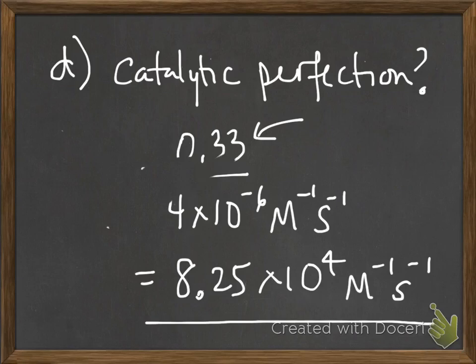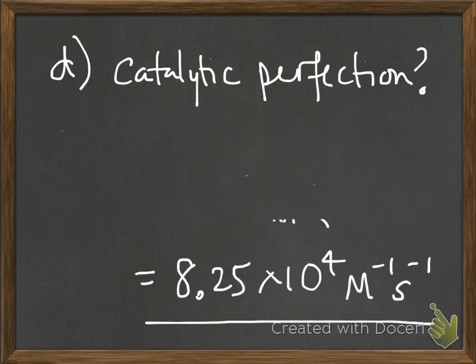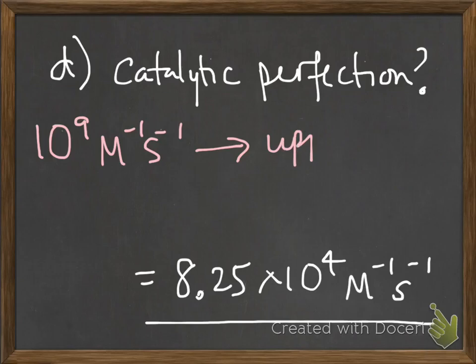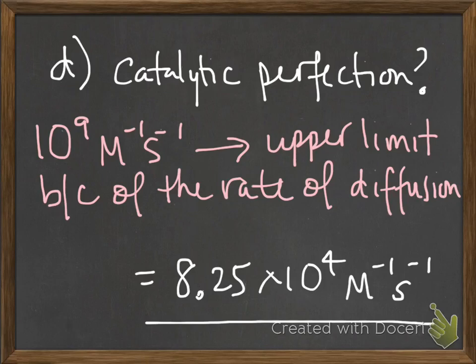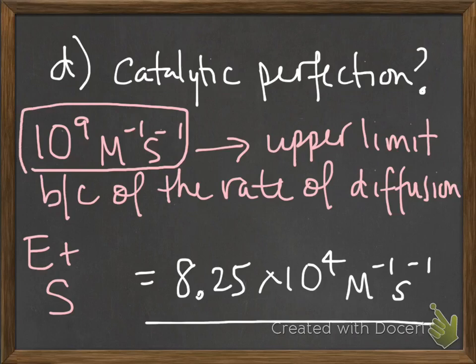In class I talked about the fact that the specificity constant can never go beyond a certain number. It can never go beyond 10 to the 9th because that is an upper limit because of the rate of diffusion. Go back to the notes and recall that I said you have to have enzyme and substrate diffuse toward each other and you can't speed that up in the cellular environment so you're limited by the rate of diffusion.